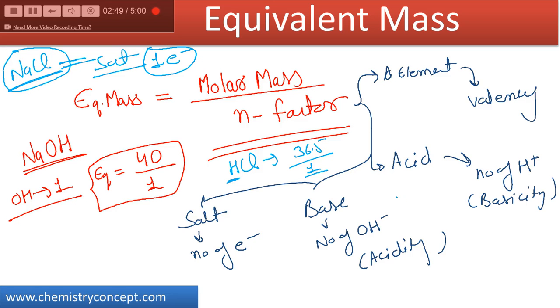But if we are talking about Mg(OH)2, here there are two replaceable OH negative ions. So in this case, n-factor would be two, and we have to divide the molar mass with two to find out the equivalent mass.